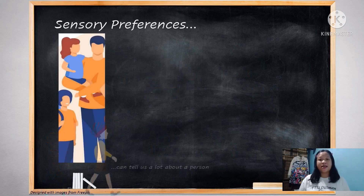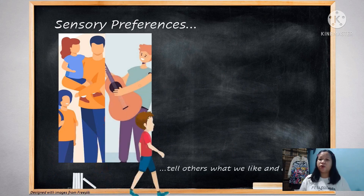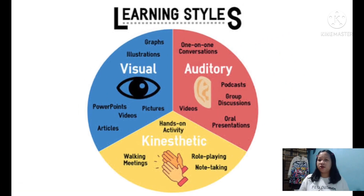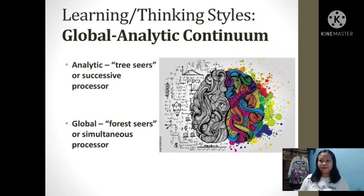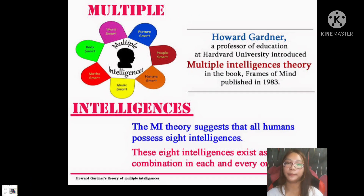First, we have the sensory preferences, which has the following types: 1. Visual Learners, 2. Auditory Learners, 3. Tactile or Kinesthetic Learners. Next is the Global-Analytic Continuum. Global Thinkers use the right side of the brain, while Analytic Learners use the left side of the brain.